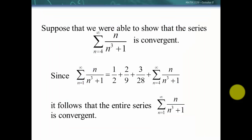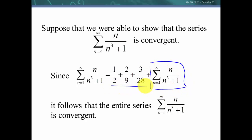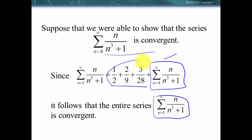Suppose we can show that a series starting at n = 4 is convergent. If we looked at the same series starting at n = 1, it would equal the series starting at n = 4 plus the first three terms. So the full series starting at n = 1 would also be convergent — it's convergent to a finite value plus a finite number of additional terms. The starting index doesn't affect convergence; those initial terms affect the value but not whether the series converges.